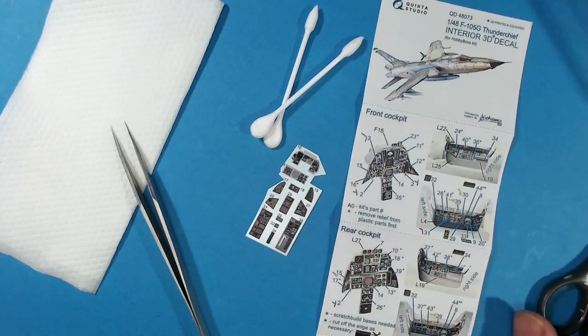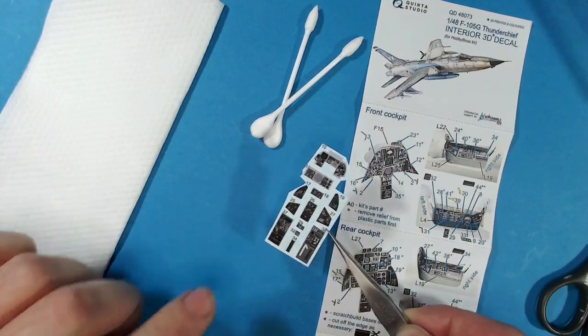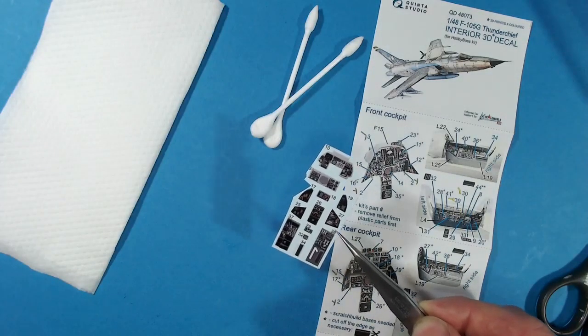Here I've got one example. I've got the 48 scale F-105G Thunder Chief 3D decal from Quinta, and you can see it basically gives you the front cockpit, the rear cockpit, and it also gives you the seat belts and a few little bits and pieces to go into the windscreen. I've already started to cut up the decal sheet. It was considerably larger when I started.